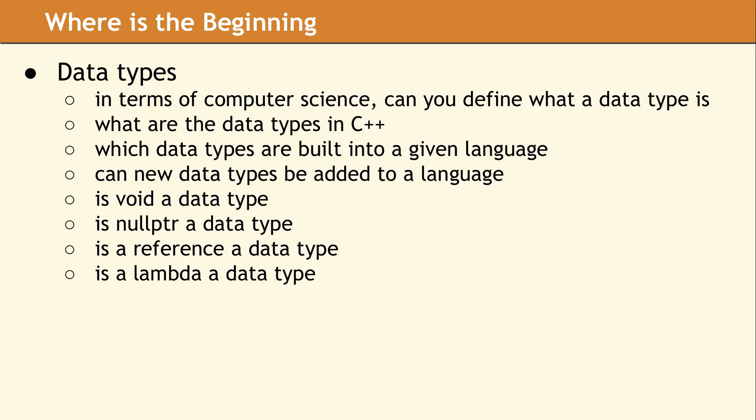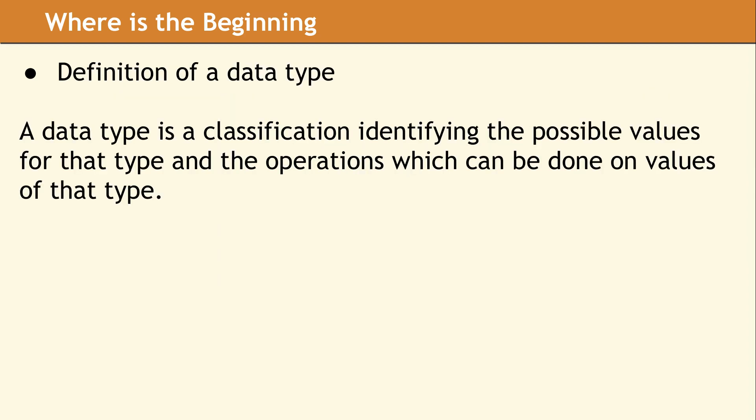So let's start by looking at the question of what a data type is. We need to know what the data types are in C++. Can new data types be added? What things are built in? And along the way, we need to look at some of the unusual items, like whether void, null pointer, references, or lambdas are data types. And if these aren't data types, then what are they?